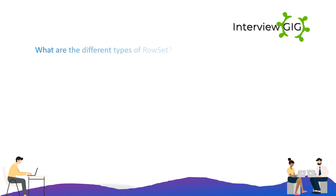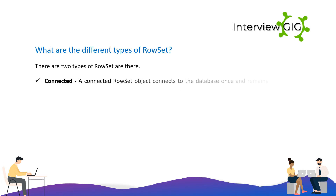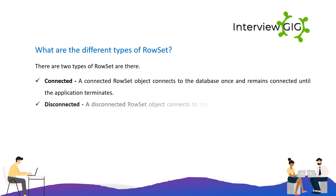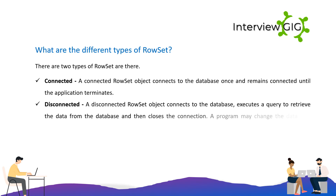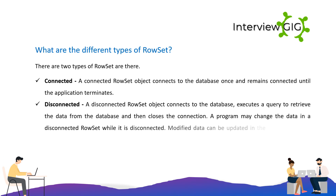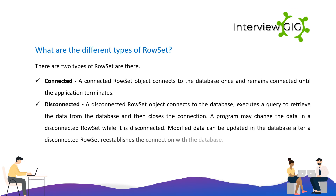What are the different types of RowSet? There are two types: Connected — a connected RowSet object connects to the database once and remains connected until the application terminates; and Disconnected — a disconnected RowSet object connects to the database, executes a query to retrieve data, and then closes the connection. A program may change the data in a disconnected RowSet while it is disconnected, and modified data can be updated in the database after the RowSet reestablishes the connection.